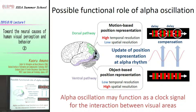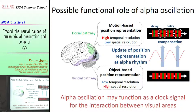To put it more generally, we propose that alpha oscillation might function as a clock signal for the interaction between visual areas — specifically the interaction between the dorsal pathway and ventral pathway. At least for now I'm studying this illusion, but in the future we want to prove that this hypothesis is more general, and that alpha oscillation functions as a clock signal to decide the timing of interaction between visual areas.